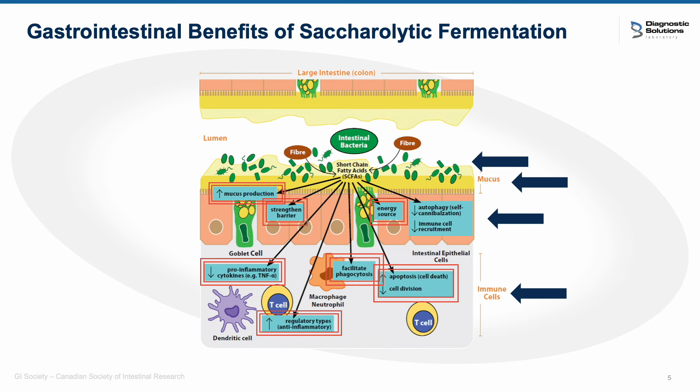Butyrate is the main energy source for colonocytes — the fuel these cells use. In the absence of butyrate, colonocytes will start to autophagy. It's really important to have butyrate present so that these cells don't die off, which would lead to severe intestinal permeability.